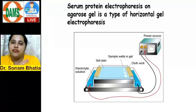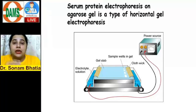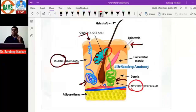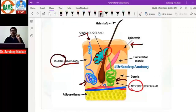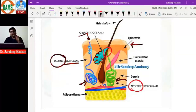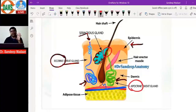Regarding apocrine sweat glands — please understand carefully — the secretions of apocrine sweat glands by themselves have no odor, no smell. But this secretion is actually metabolized by bacteria, and after metabolism by the bacteria, it gives rise to body odor.